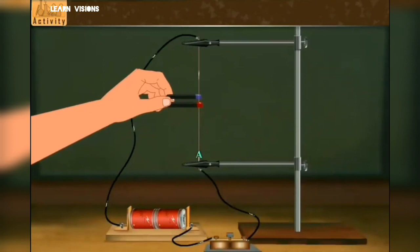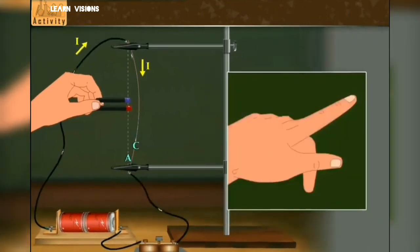Now let's apply this rule. As you can see that current is flowing through the conductor from top end to bottom end and wire deflected towards point C. So let's verify Fleming's left hand rule.